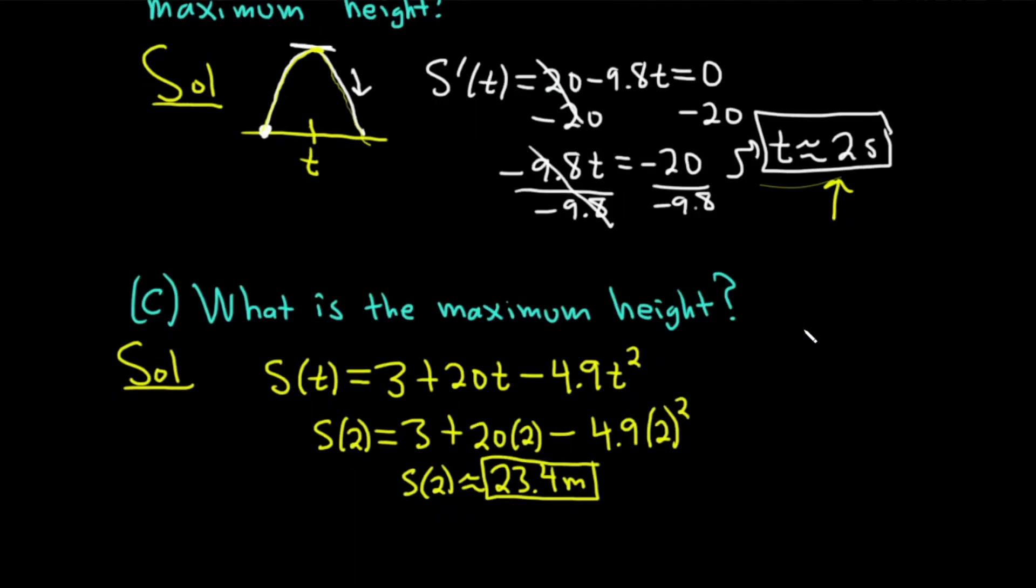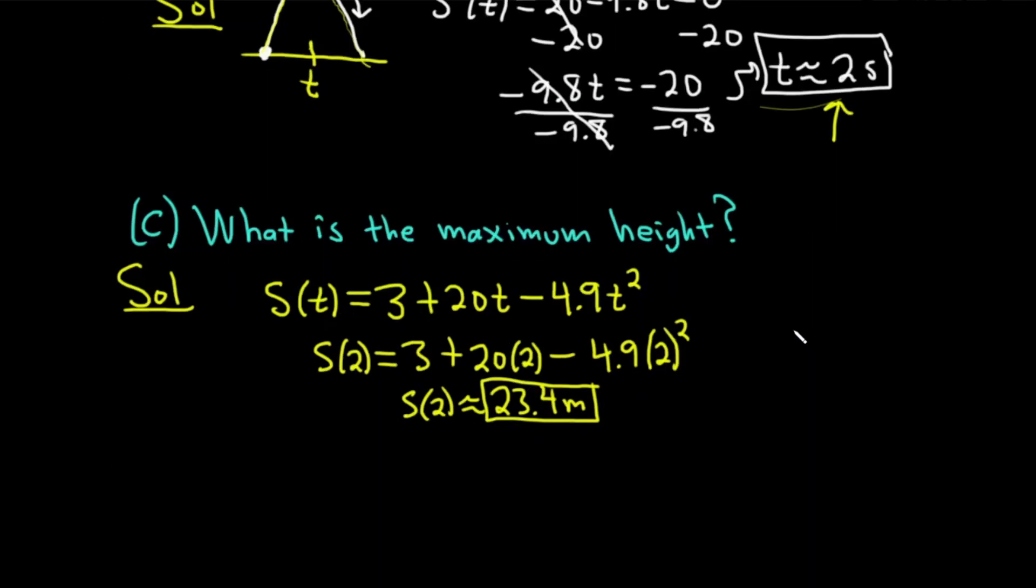Part C wanted the maximum height. Well, to find the height, we simply use our position function, which was given at the beginning of the problem. All we do is plug in two, we get approximately 23.4 meters.